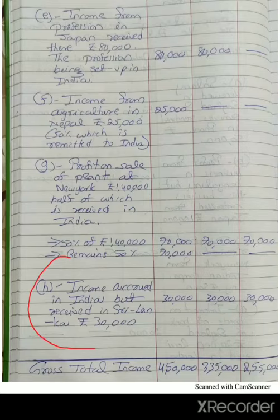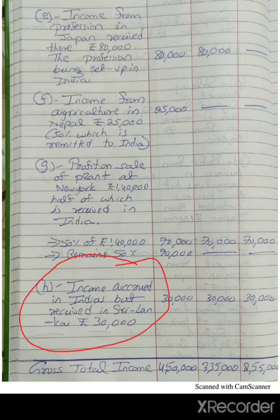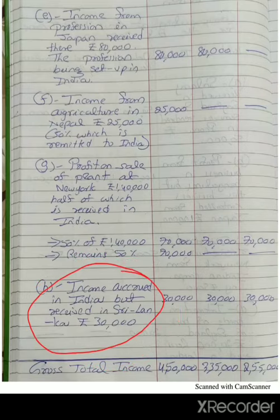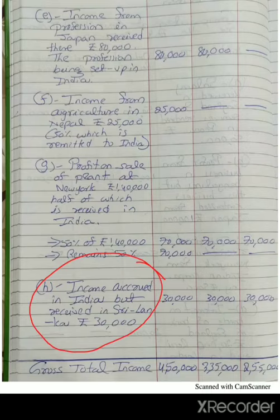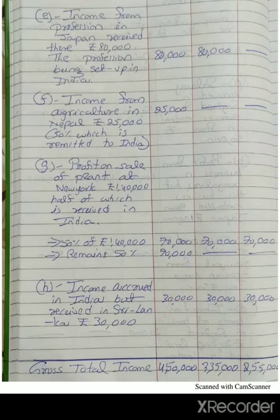The last income: income accrued in India but received in Sri Lanka, Rs. 30,000. Since the income accrued in India, it is Indian income. Indian income is taxable to all — ordinary resident, not ordinary resident, and non-resident in India.